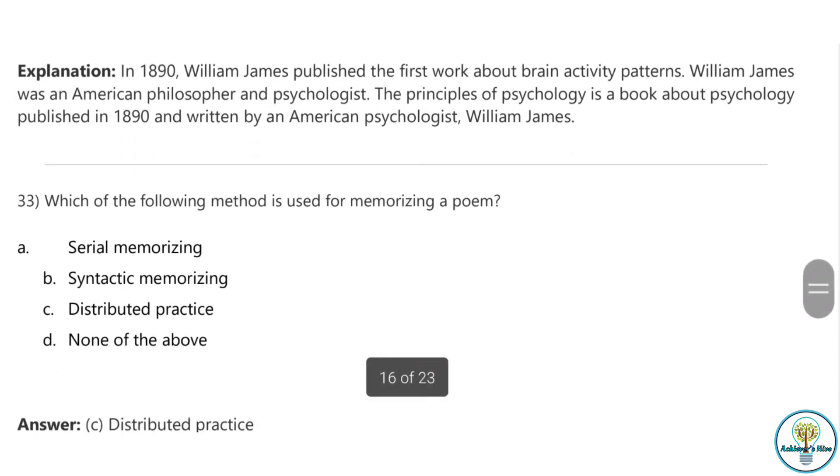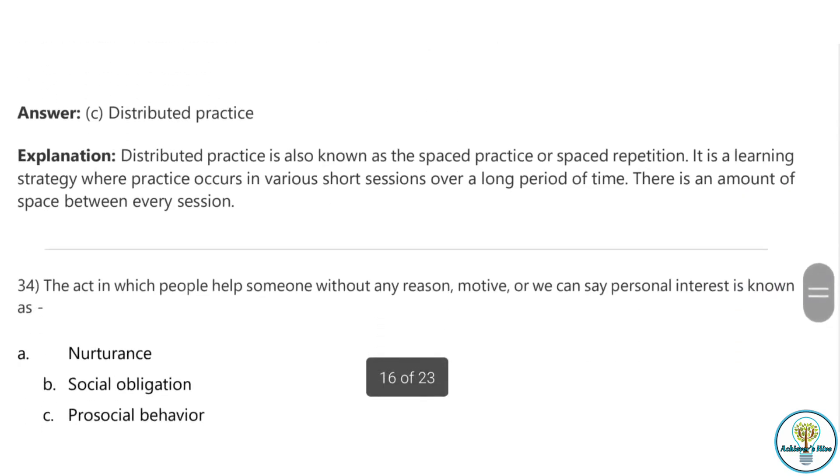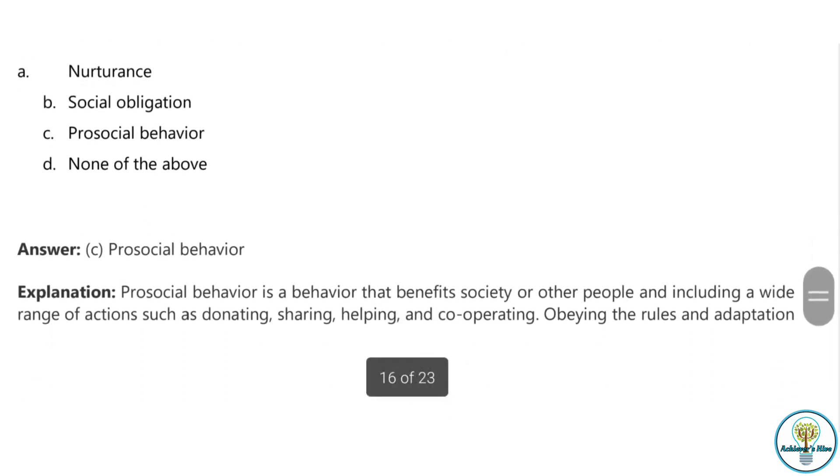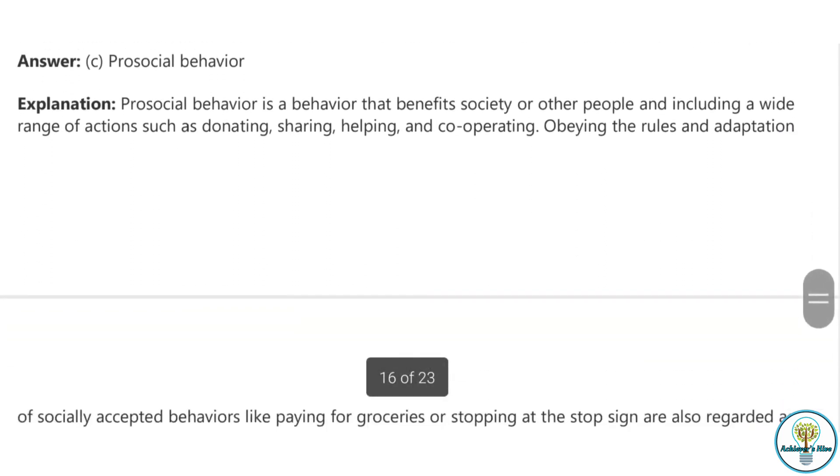Question thirty-two: Who is the author of the book Principles of Psychology? William James is the answer. In 1890, William James published his first book about brain activity patterns. He was an American philosopher and psychologist. Question thirty-three: Which of the following methods is used for memorizing a poem? There is distributed practice. Question thirty-four: The act in which people help someone without any reason is known as pro-social behavior.